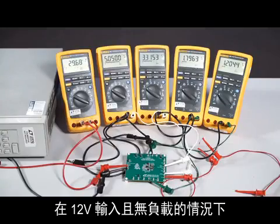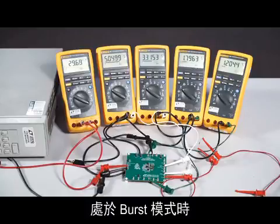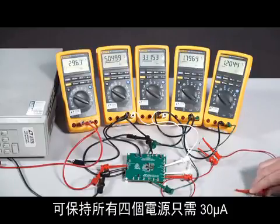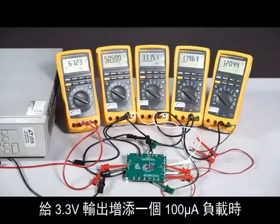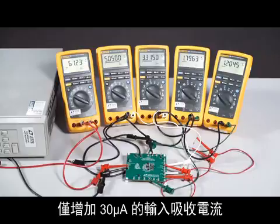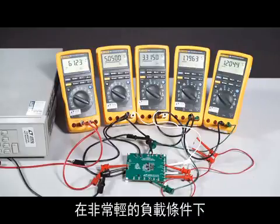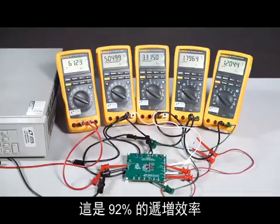With 12 volts input and no load, only 30 microamps holds up all four supplies when in burst mode. Adding a 100 microamp load to the 3.3 volt output only adds 30 microamps to the input draw. That's an incremental efficiency of 92% at very light load.